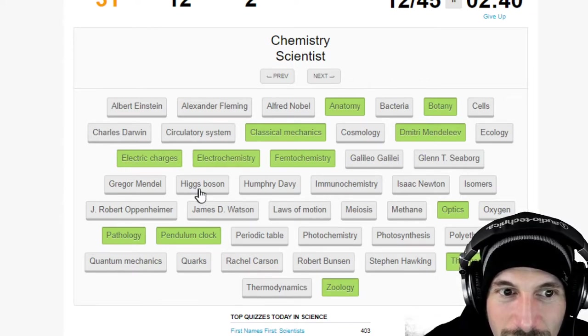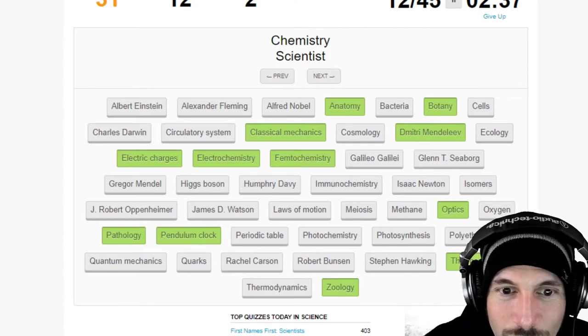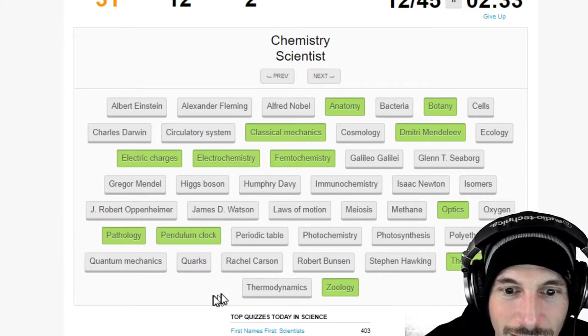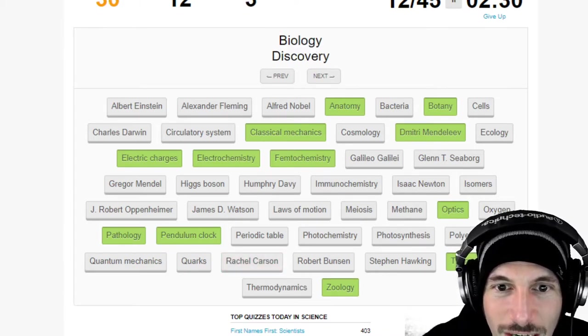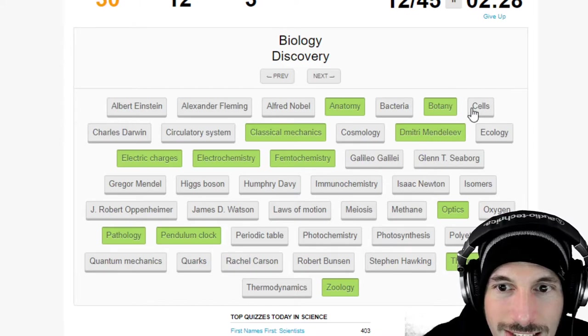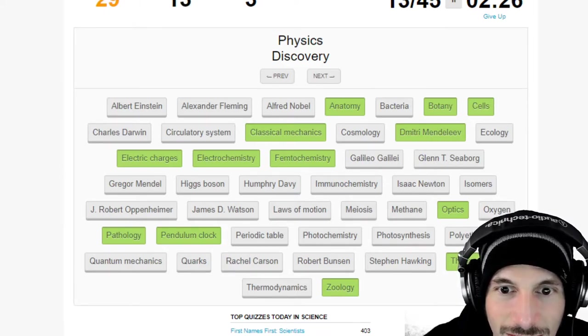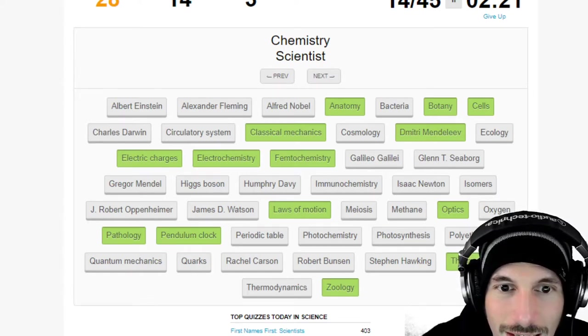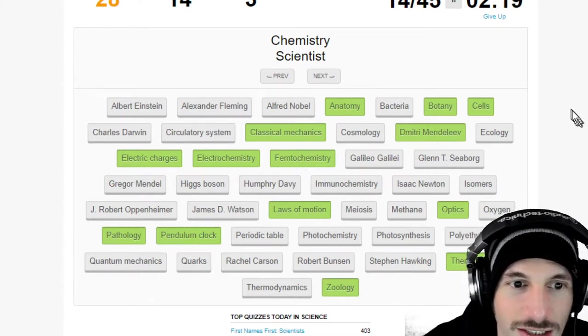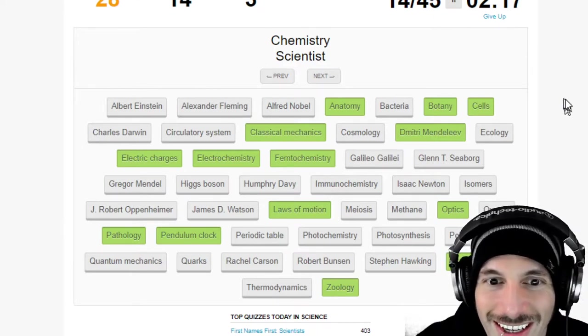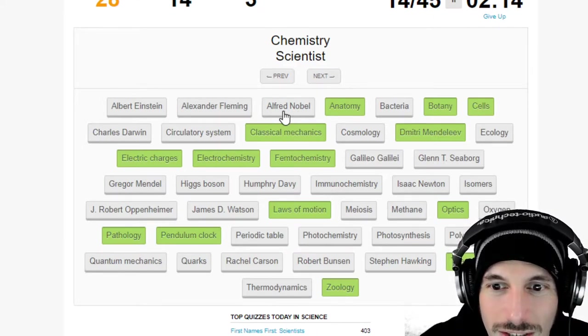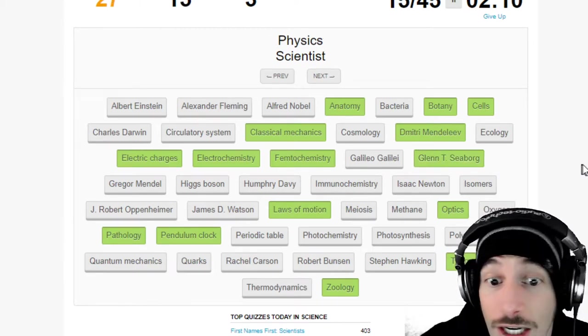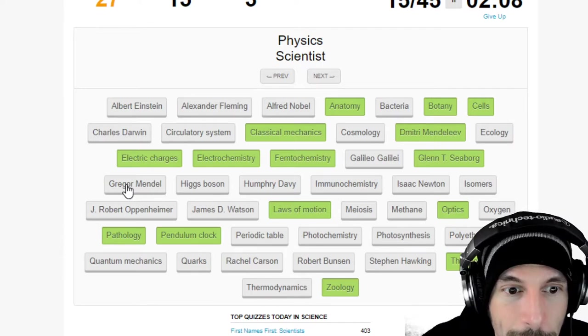Chemistry scientist, I don't know, Watson? Oppenheimer? Rachel Carson, I don't know. Biology discovery, biology discovery, cells? Nice. Physics discovery, physics, laws of motion, boom. Chemistry scientist, I thought, listen I don't know which scientist do what. Nobel, didn't we try, didn't we do that? Glenn Seaborg, oh that was just a guess, just a guess.